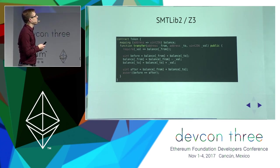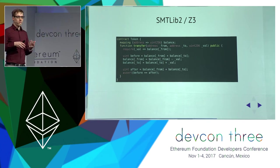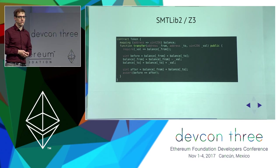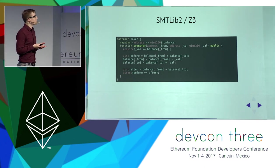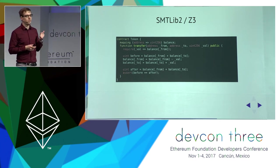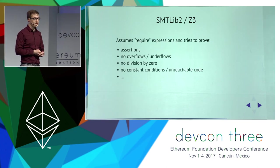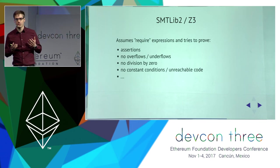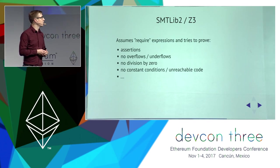We have a require statement — just a regular Solidity require. We store the sum of the two balances in a 'before' variable, perform the modification, and after that we check that before equals after using a regular Solidity assert. If the sum of the balances is not the same, this will throw an exception at runtime. But using the SMT solver, you also get a proof at compile time that this assertion will never be triggered. The tool can prove: no assertion fails, no overflow or underflow in arithmetic, no division by zero, no constant conditions, and no unreachable code.